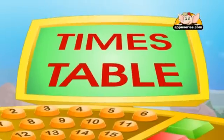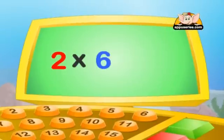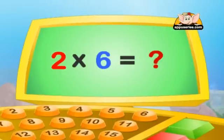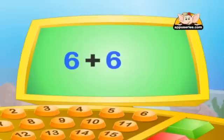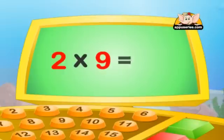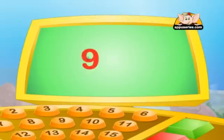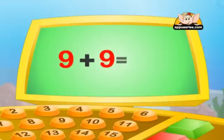So, if we have to multiply 2 into 6, it will be 6 plus 6, which is equal to 12. Or 2 multiplied by 9 would be 9 plus 9, which is equal to 18.